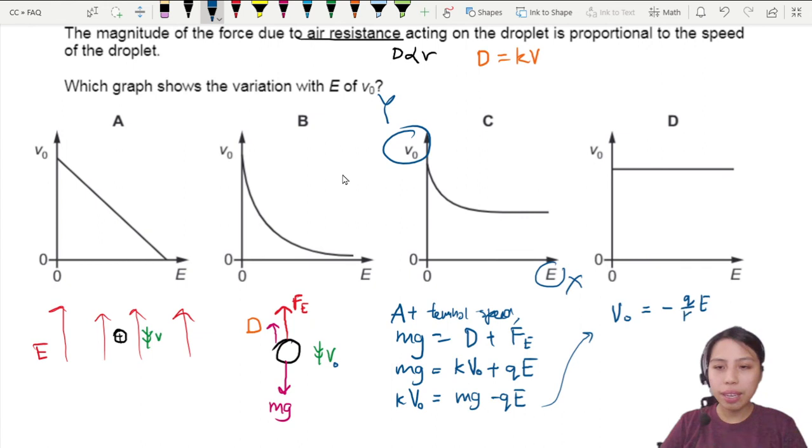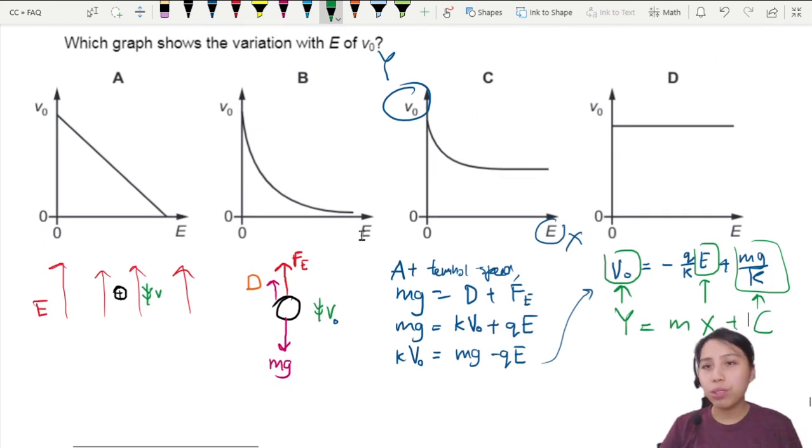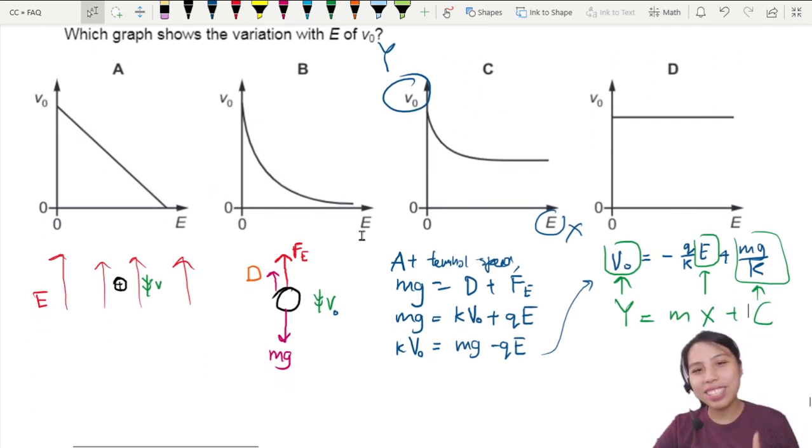This is what I can recognize as a straight line equation because my y-axis is v₀, my x-axis is E, electric field strength. Everything else is going to be y equals mx plus c. So you can do a bit of pattern matching here. Intercept is mg over k, your gradient is going to be a negative gradient, negative q over k.